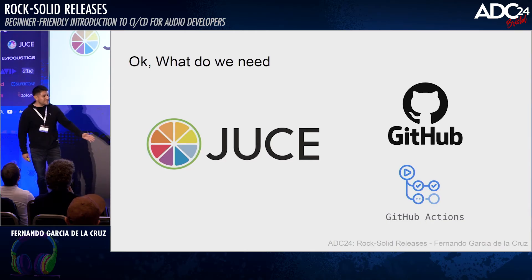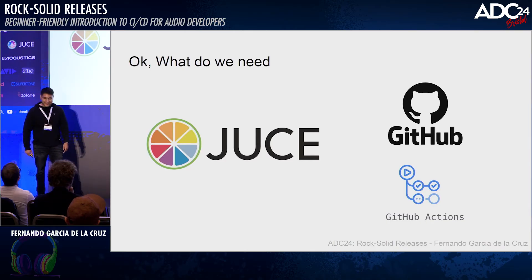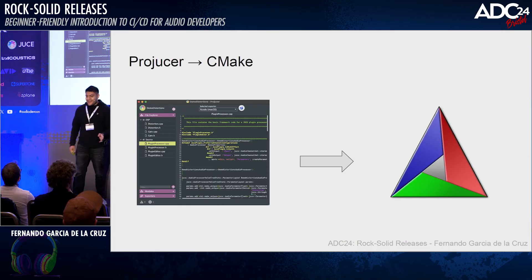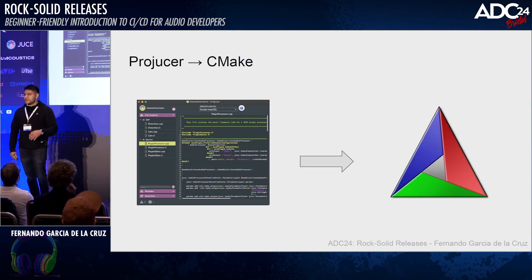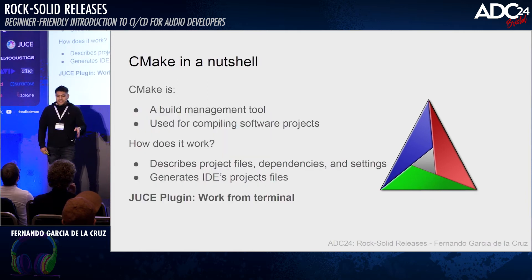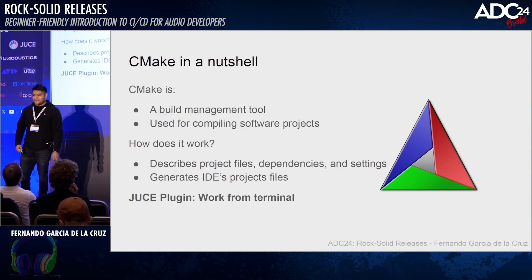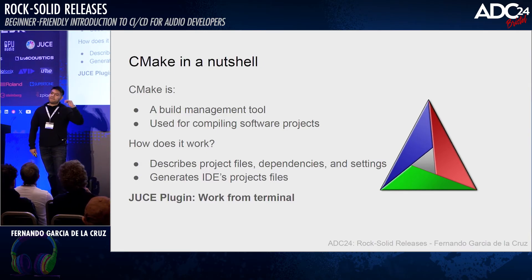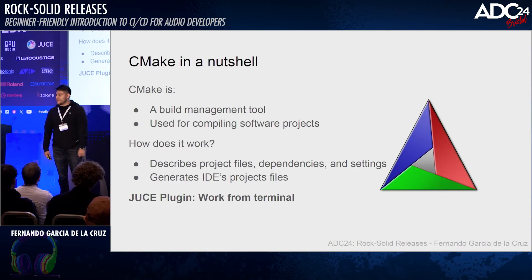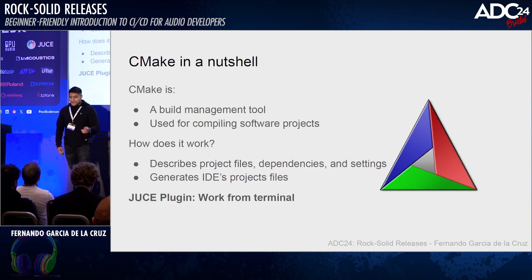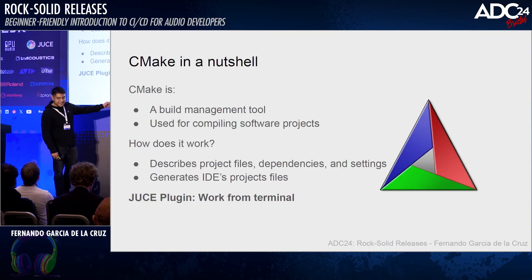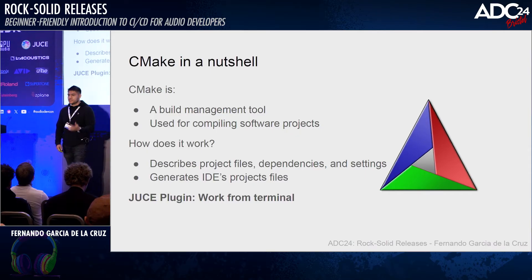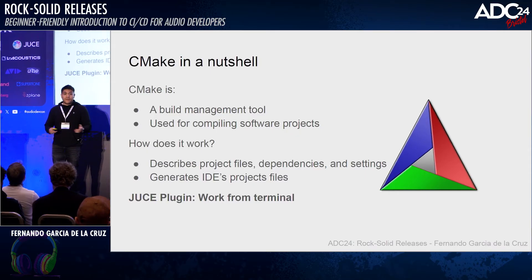What do we need first to work in a base case with JUCE and GitHub Actions? We need to move from Projucer to CMake. In a nutshell, we can think of CMake as a management tool for your software project that handles all the dependencies and the way it will compile. In the context of a JUCE plugin, it's a way to interact from the command line terminal, because we are giving instructions to the GitHub Actions pipeline just via commands.